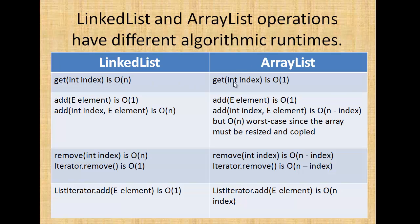In ArrayList, get is O(1). For the add operation, it is O(1). If you are using an index, in that case it will be O(n). But add is O(1), with the first case being O(n) since the array must be resized and copied.